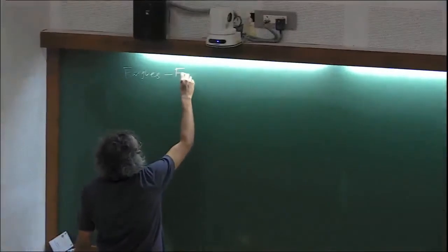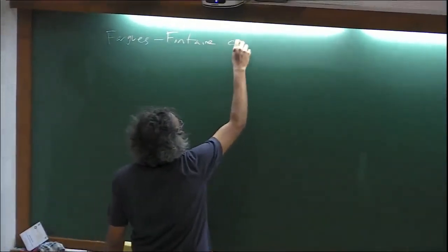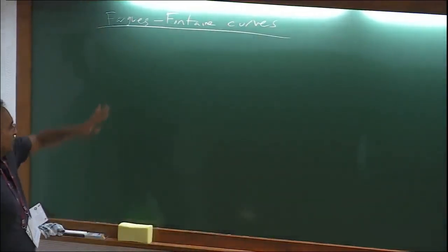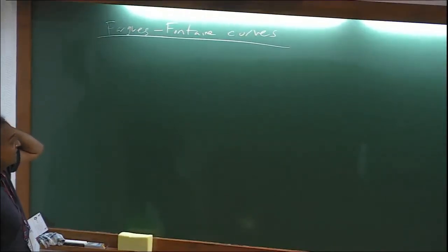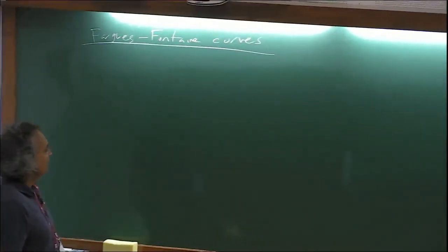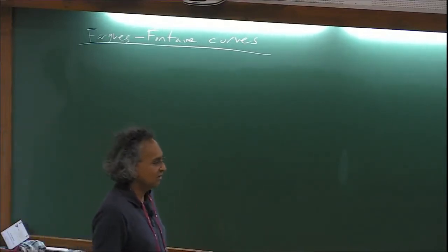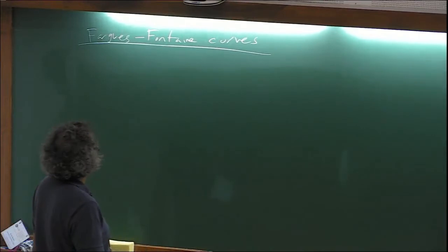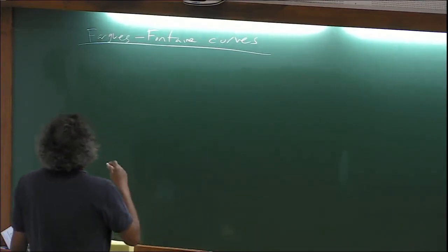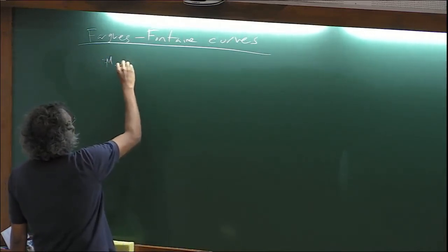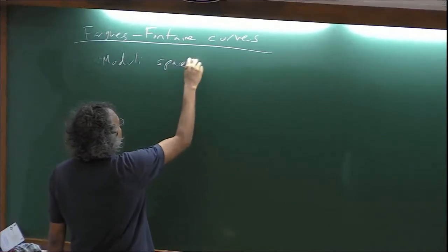The plan for today is to talk about these objects that have been mentioned on several occasions so far but haven't been defined yet: Fargues-Fontaine curves. These are a really beautiful class of objects that came into existence at around the same time as the theory of perfectoid spaces was coming together. The Fargues-Fontaine curves are basically meant to be moduli spaces of untilts.